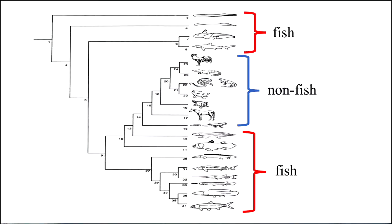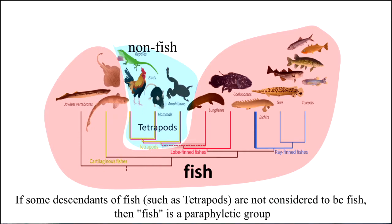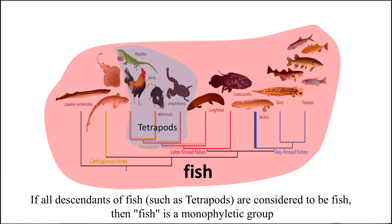Here's another way of saying it: the cartilaginous fish are on the top, the non-fish tetrapods are in the middle, and the other bony fish are on the bottom. Anyway, it's a controversial issue, but just recognize that we are a type of fish — we have an inner fish. If some of the descendants of fish, such as tetrapods, are not considered to be fish, then fish is a paraphyletic group. A paraphyletic group is just a bad group that doesn't include all of the descendants of the common ancestor.